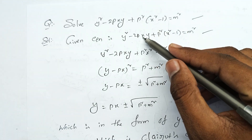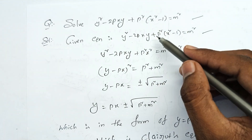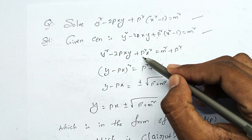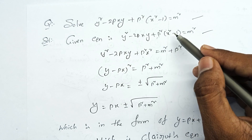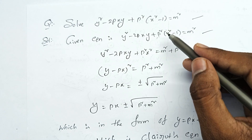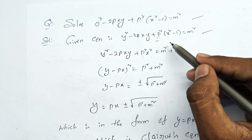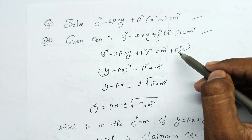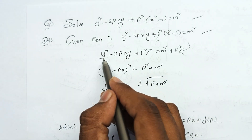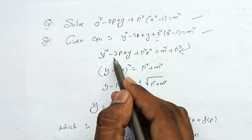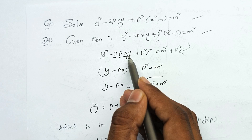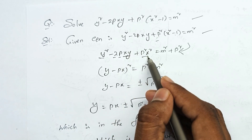We have y squared minus 2pxy plus p squared x squared, minus p squared into minus 1 gives minus p squared. Then plus p squared x. We can use the formula.